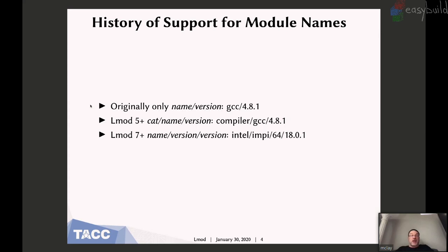In Lmod 7, which came out a couple of years ago, you can now support both. You can have a name and a directory, which is a version and a version file. So the name of the module might be Intel MPI, and its version is 64/1801.